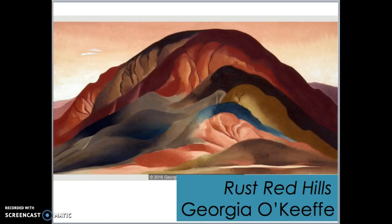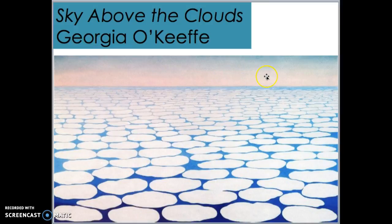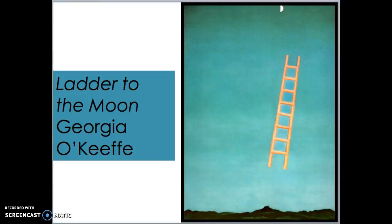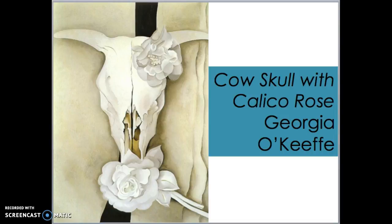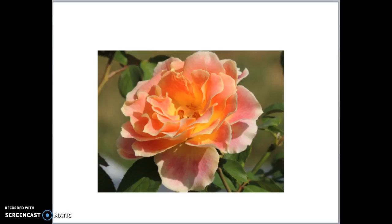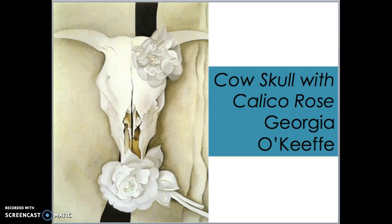This is the one that we studied: The Sky Above the Clouds by Georgia O'Keeffe. Then we have Ladder to the Moon. This one is called Cow Skull with Calico Rose. A lot of kids have been remembering 'Cow Skull with Rose,' but it's Calico Rose — it just sounds fun. Say Calico. This is actually a picture of a calico rose, which is kind of neat. Cow Skull with Calico Rose by Georgia O'Keeffe.